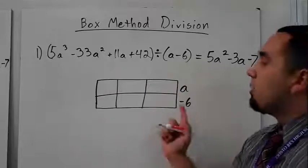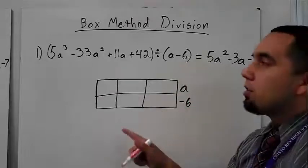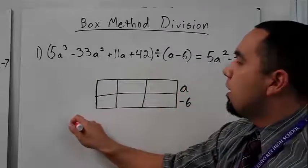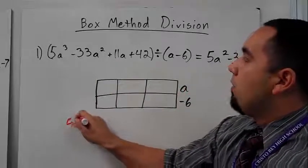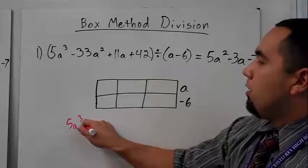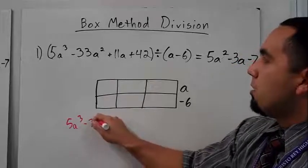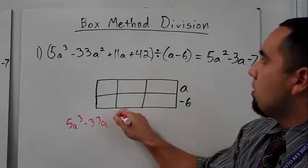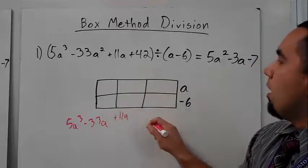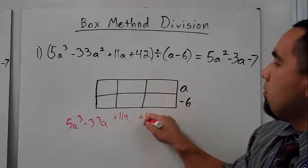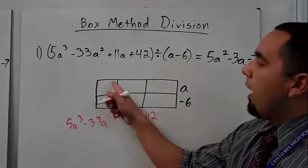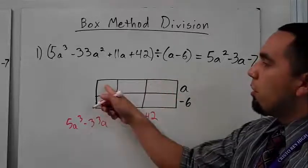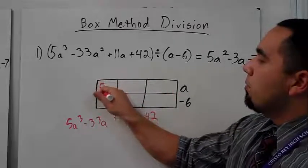So basically I'm going to do the same thing, but I'm going to do it backwards. So I know what my answer should be if I do the box, and my answer should be 5a cubed minus 33a squared plus 11a and plus 42. So I know that these terms come from the diagonals, and I know my first box is always my first term, because there's only one box there.